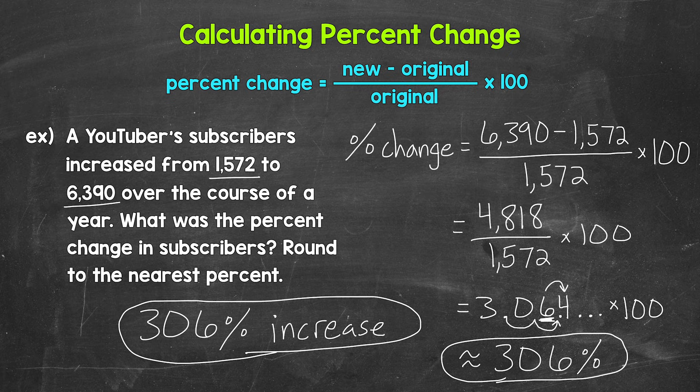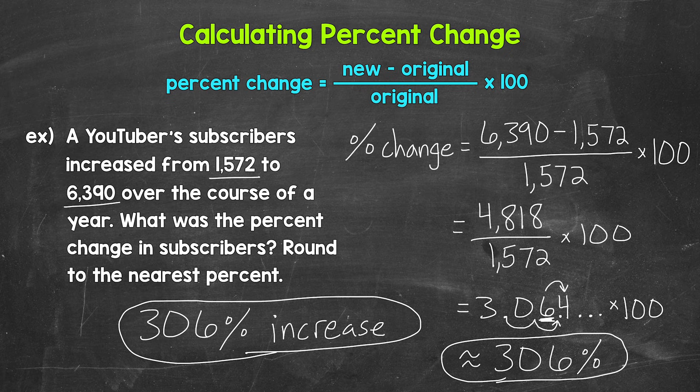Now I do want to mention when it comes to percent changes that are 100 percent or more, a 100 percent increase means that the original value doubled. So this 306 percent increase makes sense. The original amount of subscribers more than doubled, which tells us the percent change is going to be more than 100 percent.